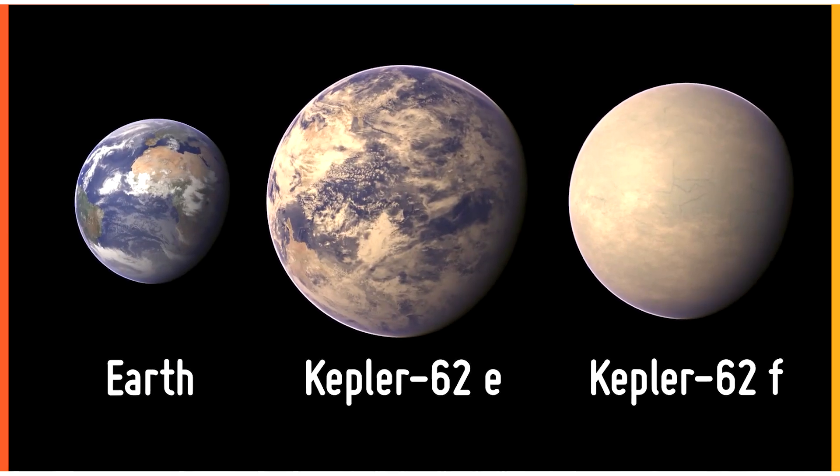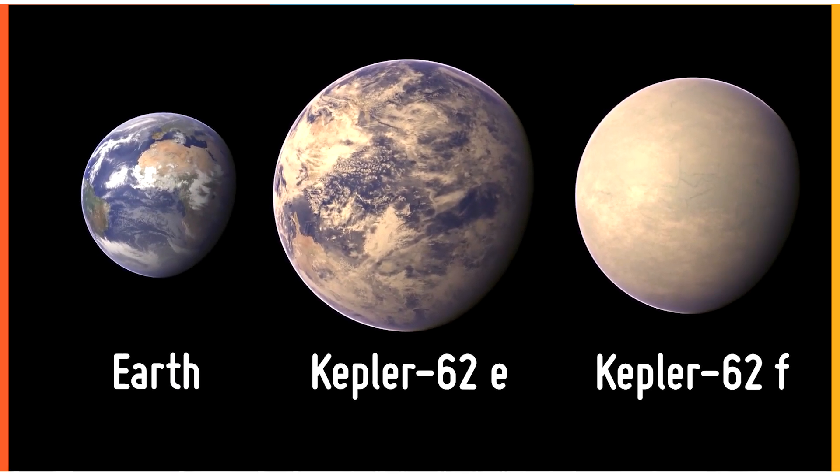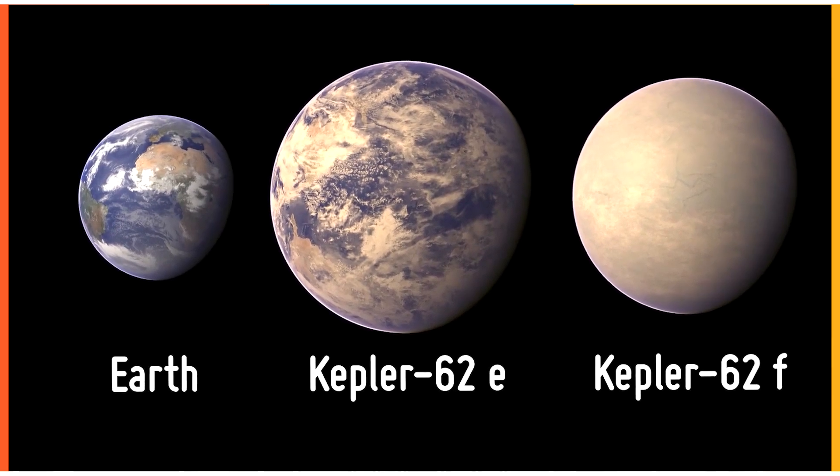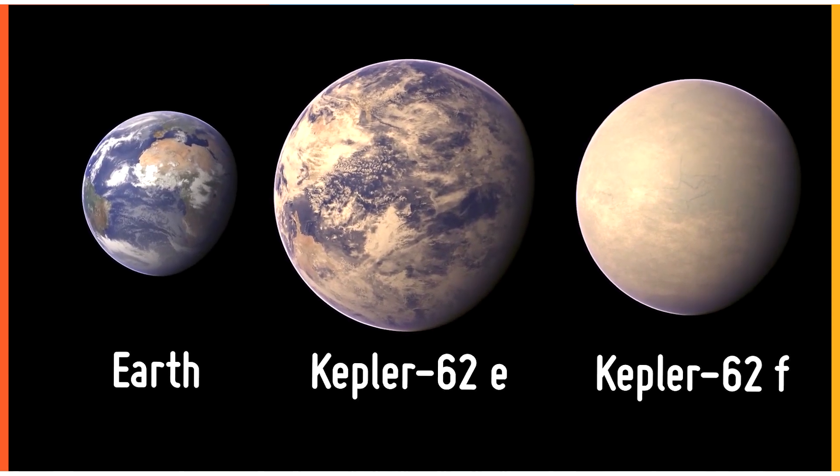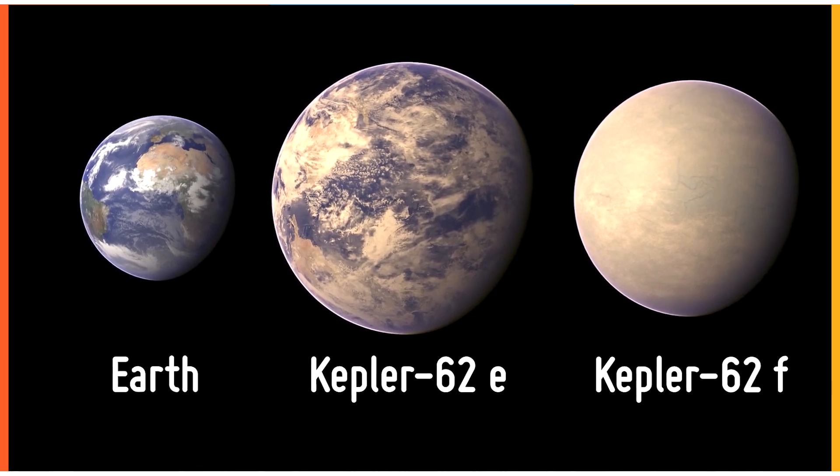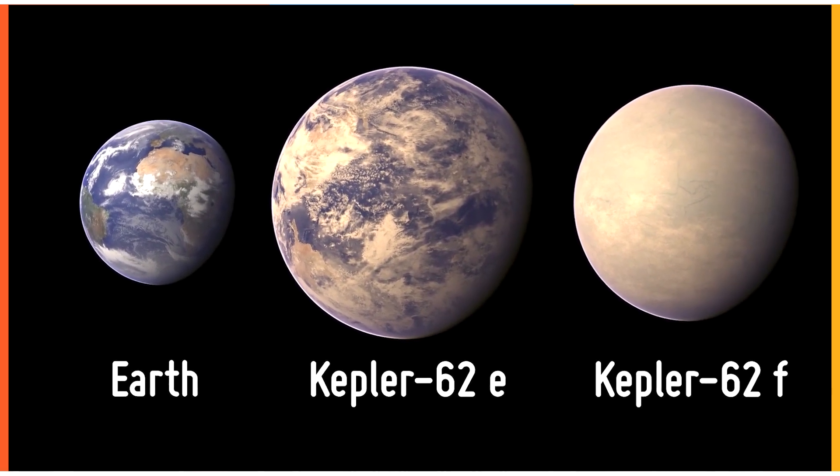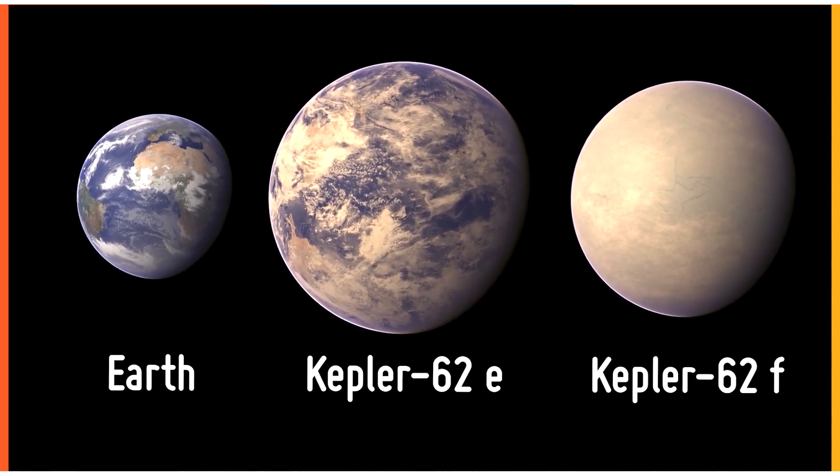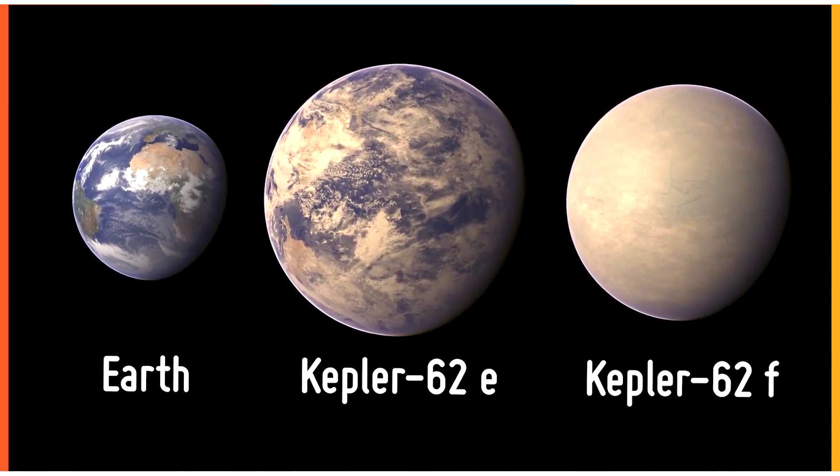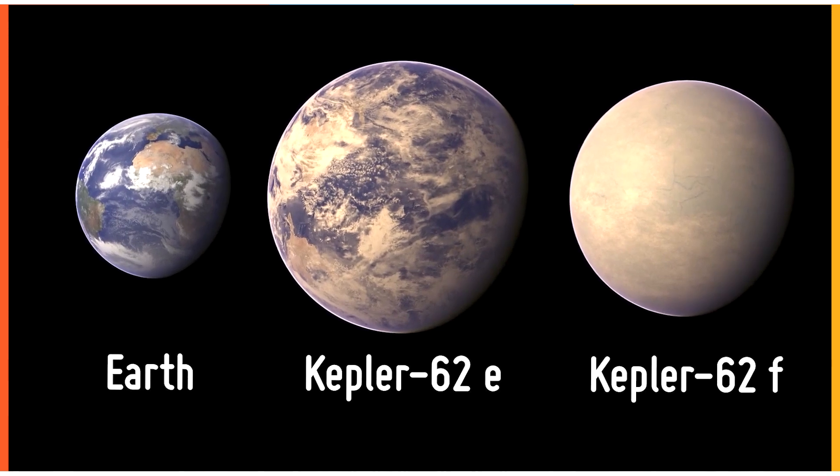Kepler-62e and Kepler-62f are two strange worlds found by the telescope, both of which are water worlds with a worldwide ocean, unlike Earth, which has a large percent of dry land. The planets in the constellation Lyra are around 1,200 light-years distant and are roughly the same size as Earth.